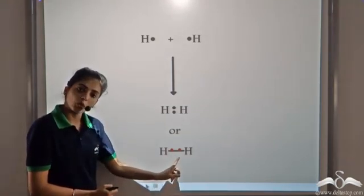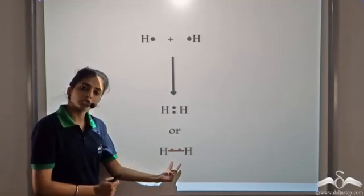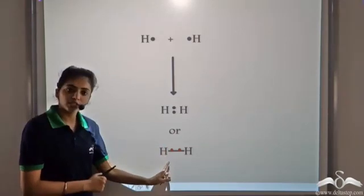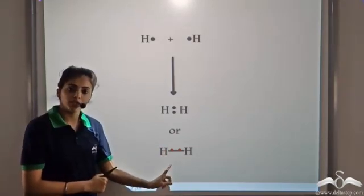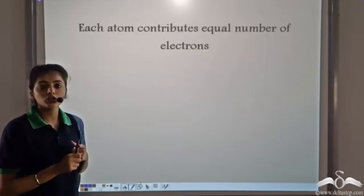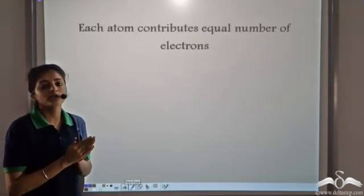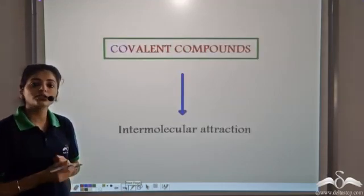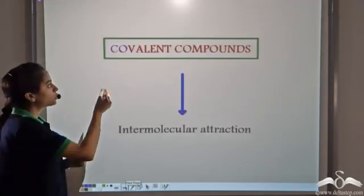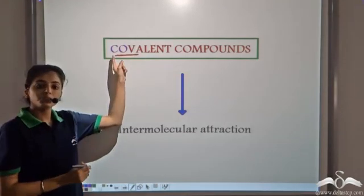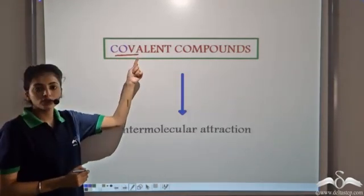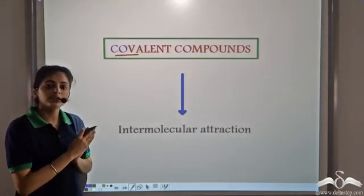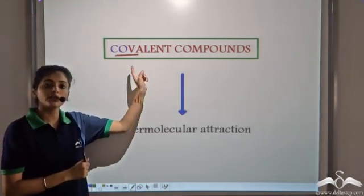This single bond shows that there are two electrons shared between the two atoms. Whenever there is a single bond, it means two electrons are being shared and each atom is contributing one electron. Such compounds which are formed are known as covalent compounds — covalent because the valence electrons are together, meaning they are sharing the valence electrons.